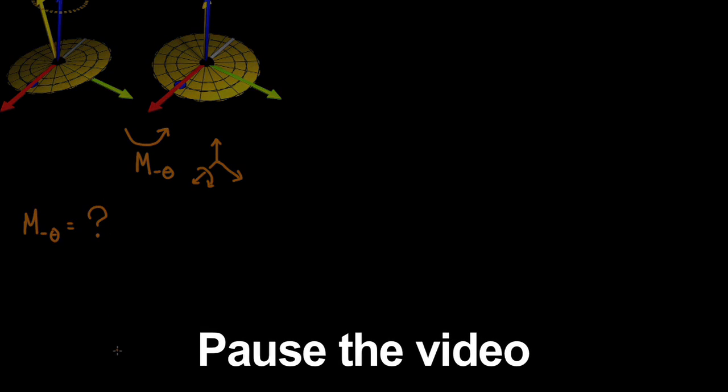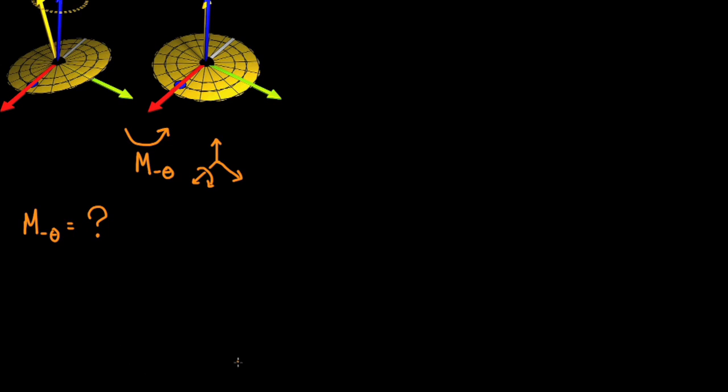What is the matrix that undoes the tilt of theta degrees about the x-axis? Pause and write down a matrix. We rotate by an angle negative theta about the positive x-axis, which is represented by this matrix.